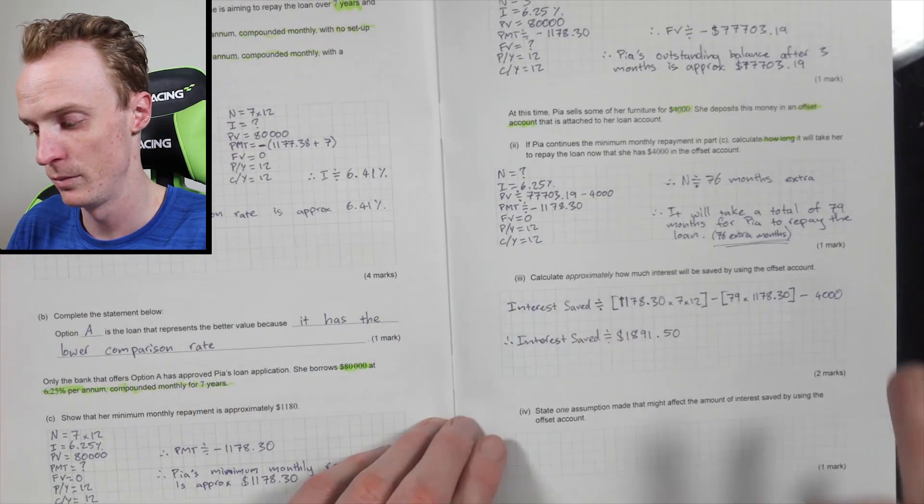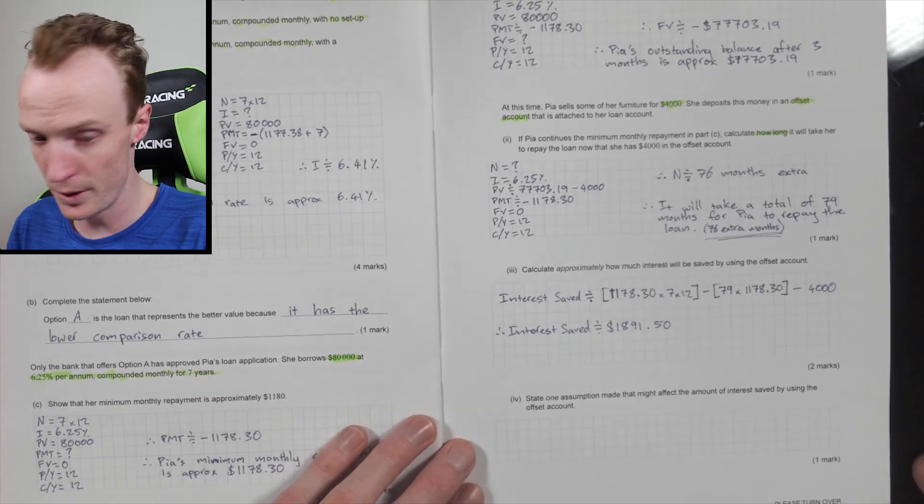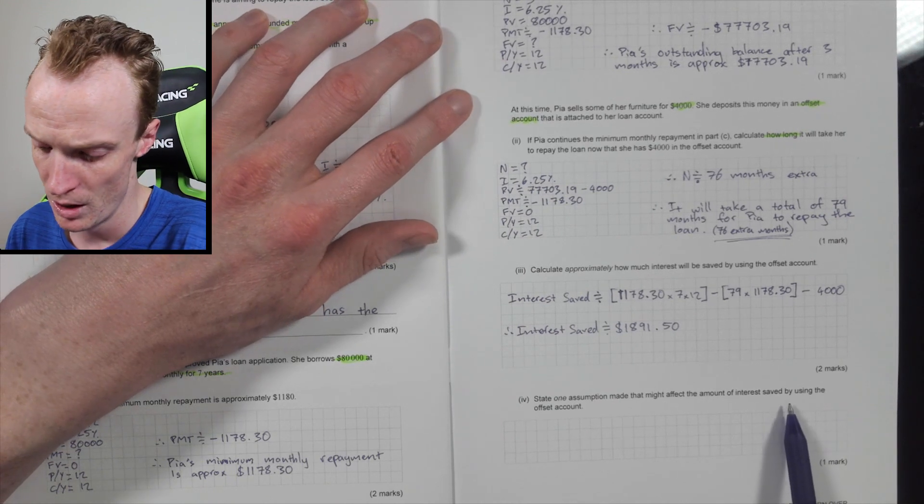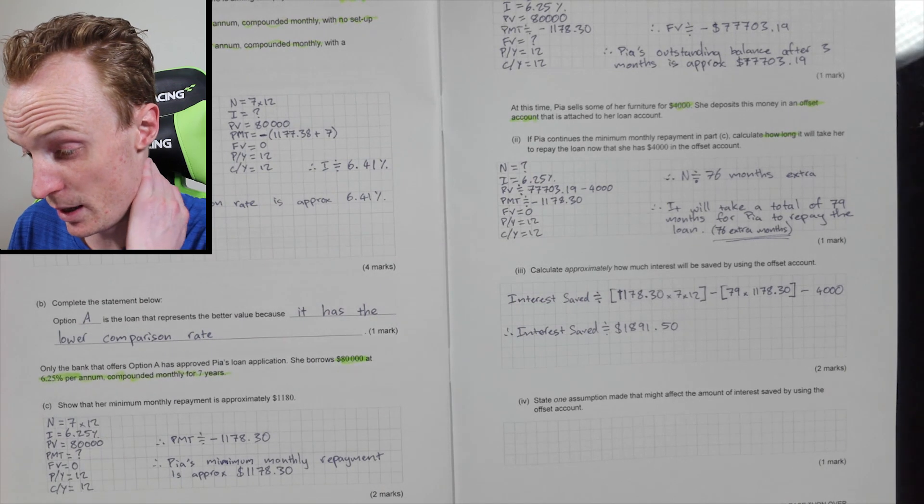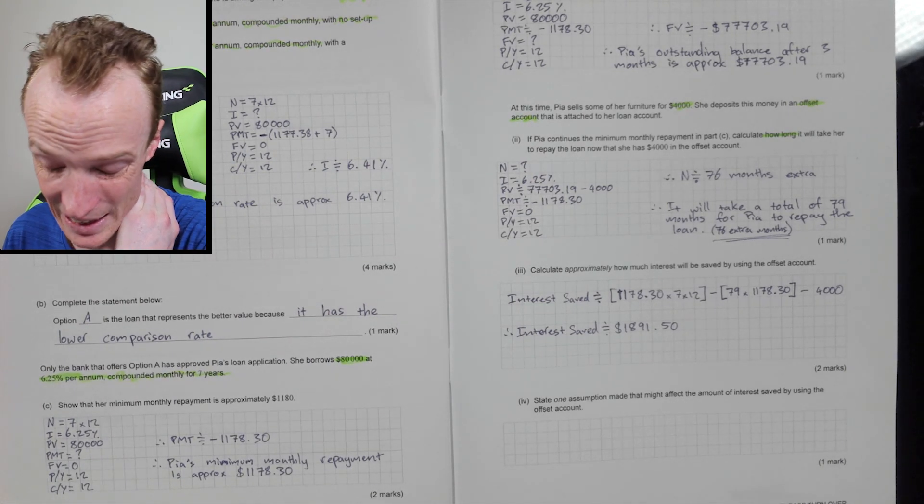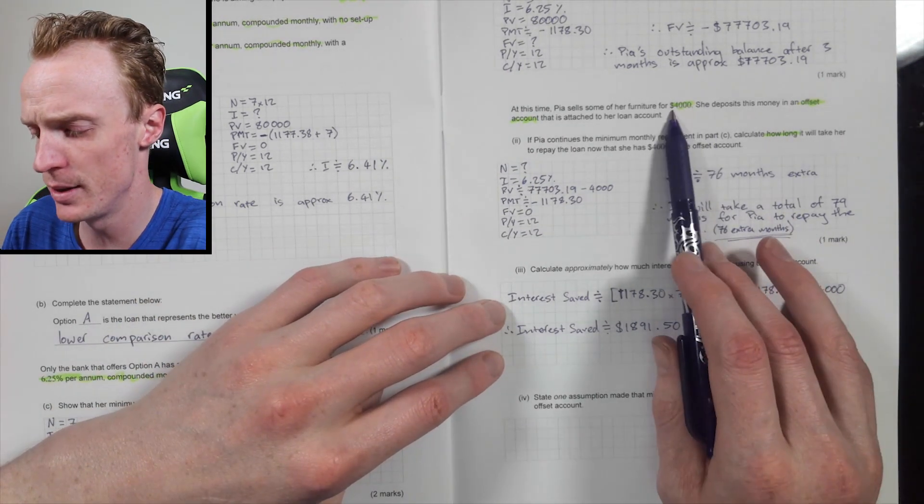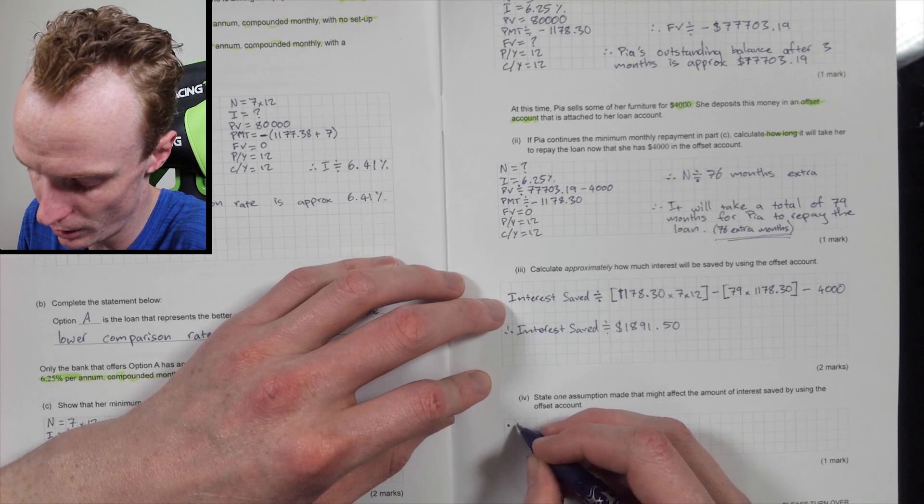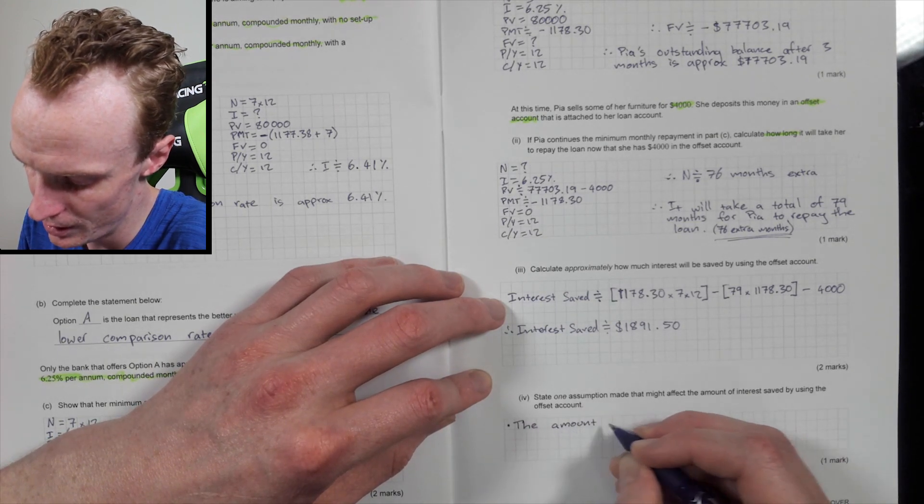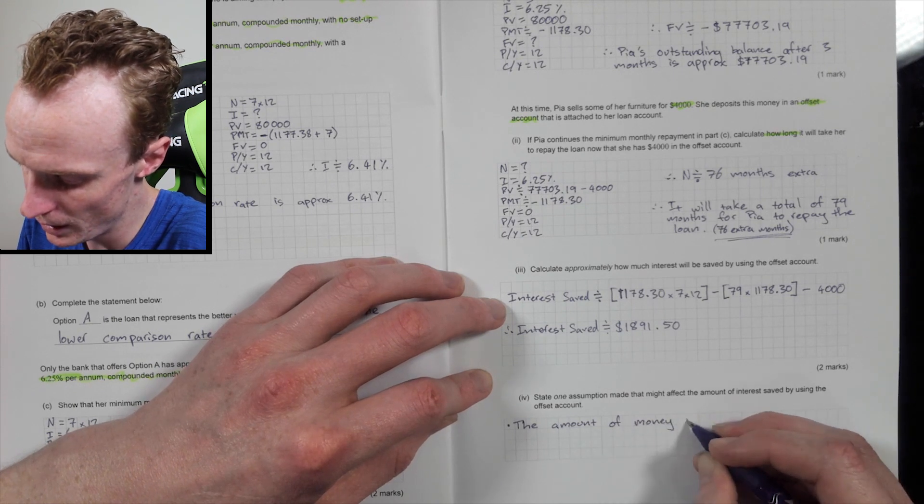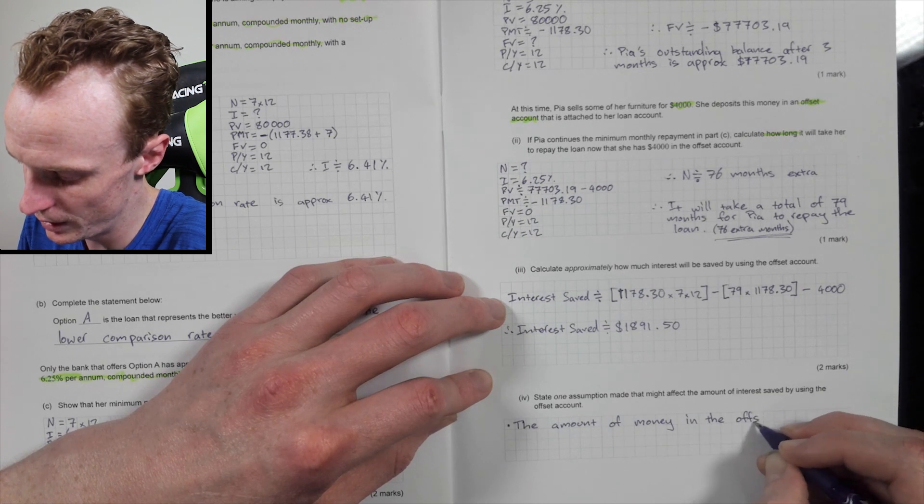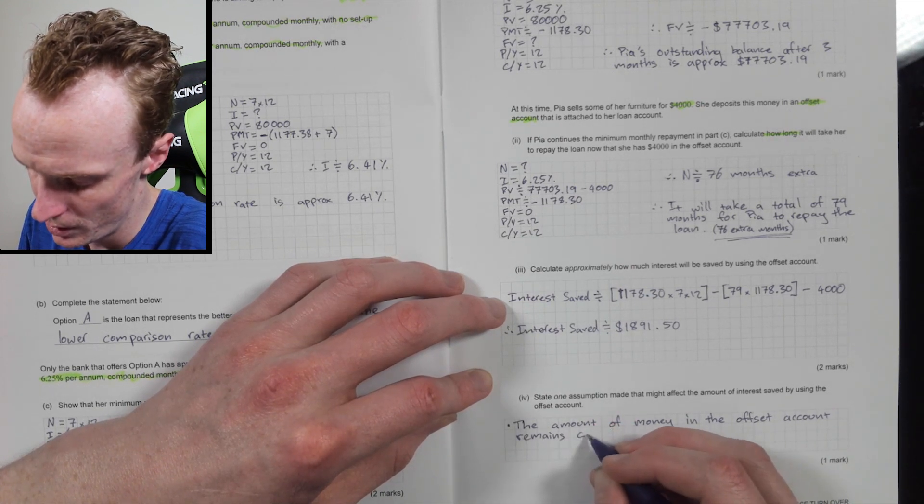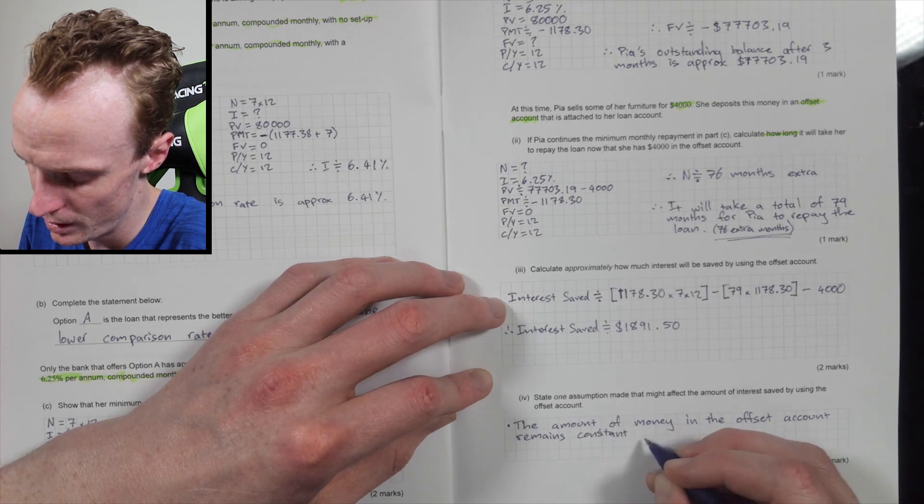Alright. Is this the last question? It is fantastic. Alright. So the last question is, state one assumption that might have affected the amount of interest saved by using the offset account. Well, there's actually quite a number of them here. The first one is that, the amount of money in the offset account, this is probably what I'm thinking about, the amount of money in the offset account, because this is something that you can draw upon all the time. So the amount of money in the offset account remains stable at $4,000. So the amount of money, so the amount of money in the offset account remains constant at $4,000. For me, that would be the easiest one to think about.